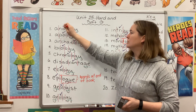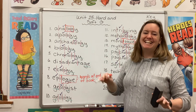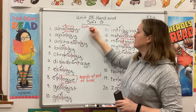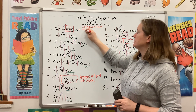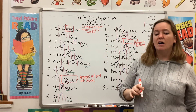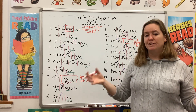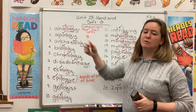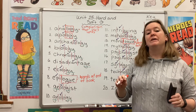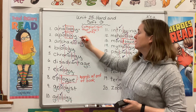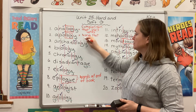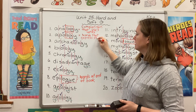I want you to notice a word like analogy has LOG in it. An analogy is a comparison that uses words — rock is too hard as pillow is too soft. We use words to compare rocks and pillows, so that's where the LOG in analogy comes from. We also see that in apology — when you make an apology, you use words to express your regret or your sorrow.